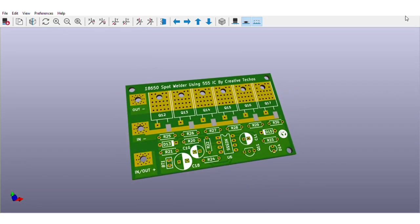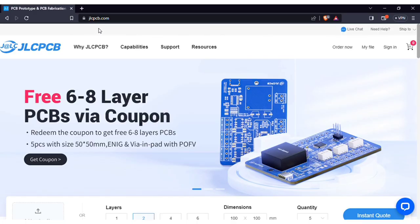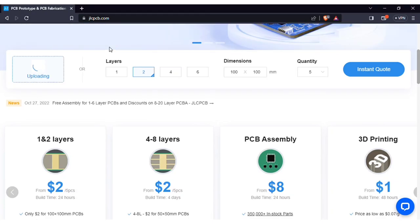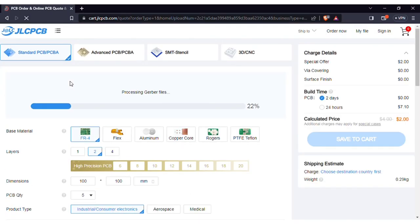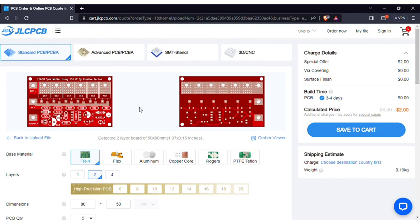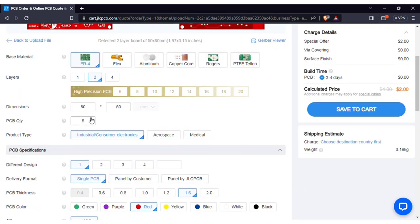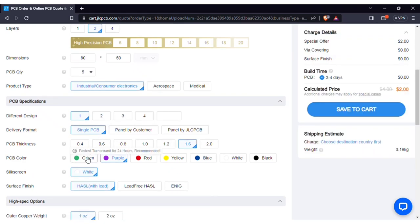In order to manufacture this PCB visit jlcpcb.com and here you can add the Gerber file I provided. After uploading you can see the preview of the PCB, you can also change quantity and the color of PCBs as per your requirements and then save to cart for checkout.